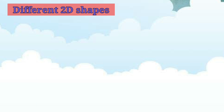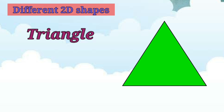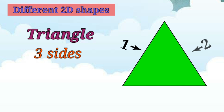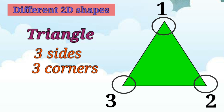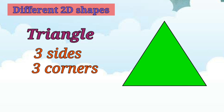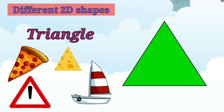Let's move to our next shape. Now, what shape is this? It's a triangle. A triangle has 3 sides — 1, 2, 3 — and it has 3 corners — 1, 2, 3. Examples of triangles are a slice of pizza, cheese, traffic signs, and a boat sail.